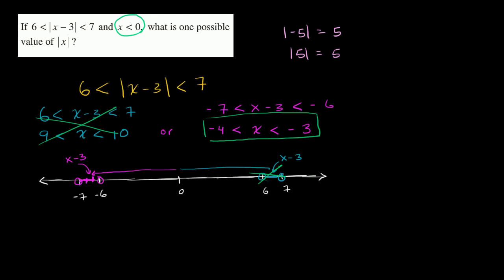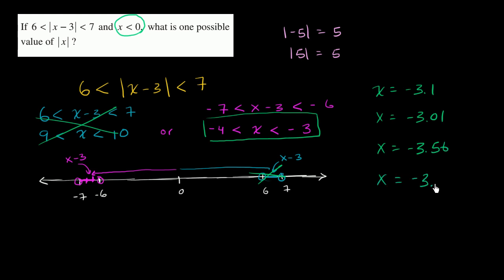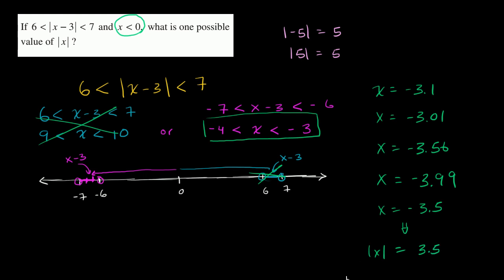You can pick any x in the interval between negative 3 and negative 4 — for example, negative 3.1, negative 3.01, negative 3.56, or negative 3.99. So one possible value is x equals negative 3.5, and then the absolute value of x would equal positive 3.5. And we are done.